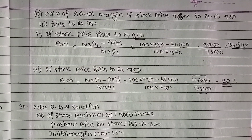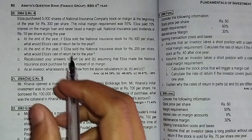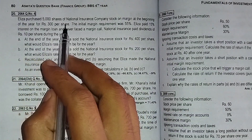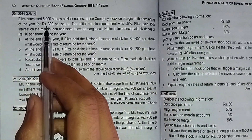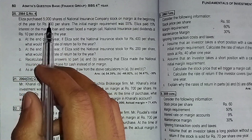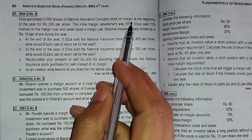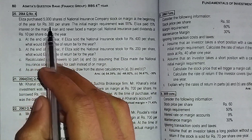This is our 2075 question number 7. Now we will solve the question from 2074. Eliza purchased 500 shares of National Insurance Company stock on margin at the beginning of the year for Rs. 300 per share.